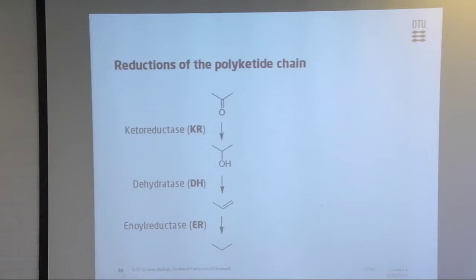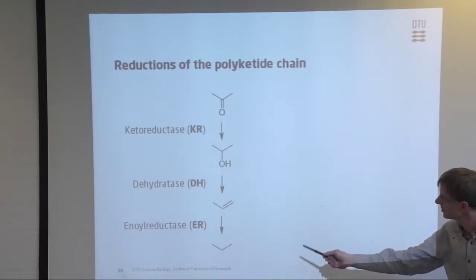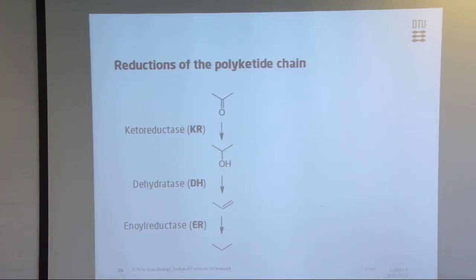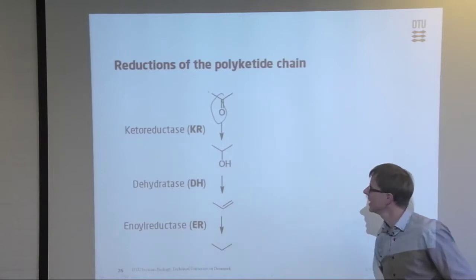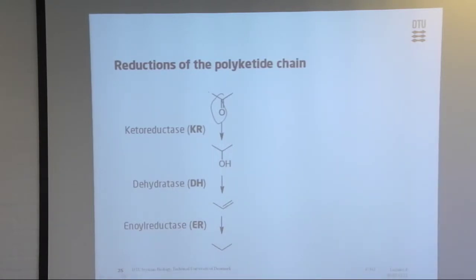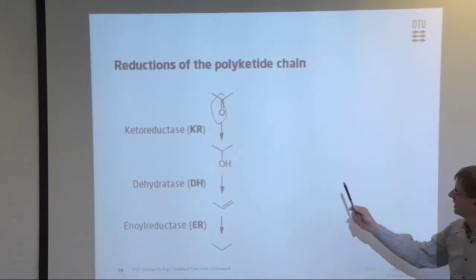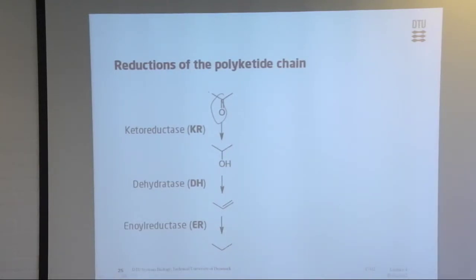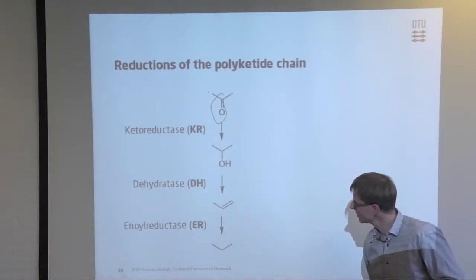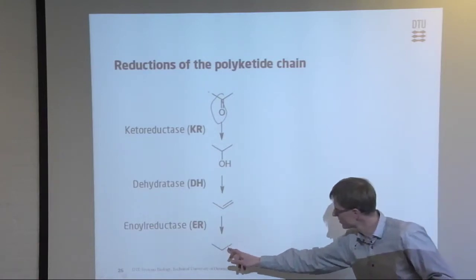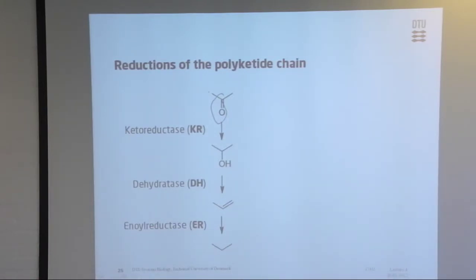I'd like to draw your attention to these types of reduction reactions that are happening. We have the keto group, and the enzymes that produce these polyketides can reduce the keto group - first from a keto group to a hydroxy group. So the first enzymatic activity is ketoreductase activity. Then as you saw in the aldol, we can lose water via dehydratase enzymatic activity, forming a double bond, and we can reduce all the way down to an aliphatic chain.